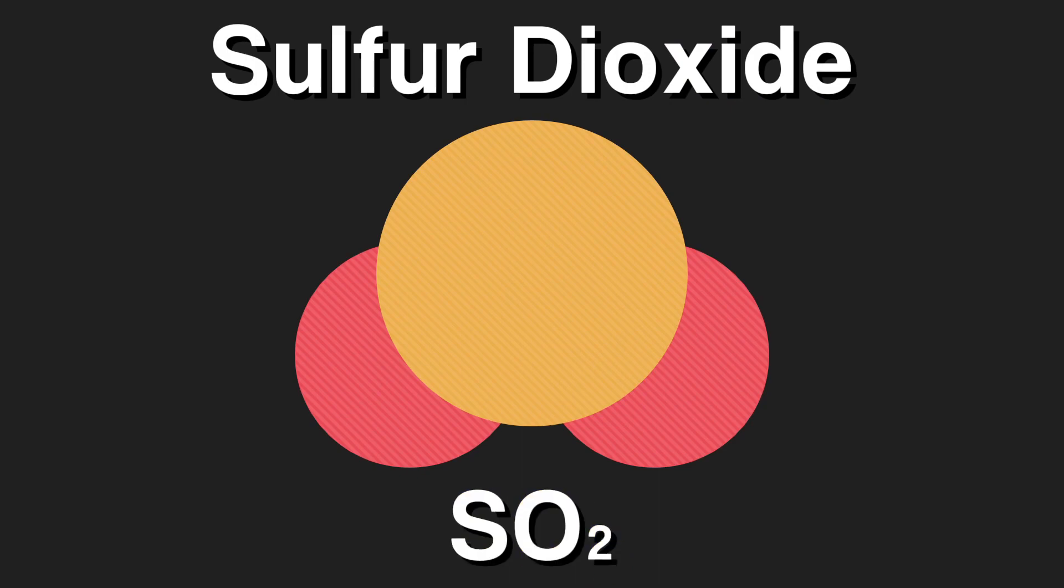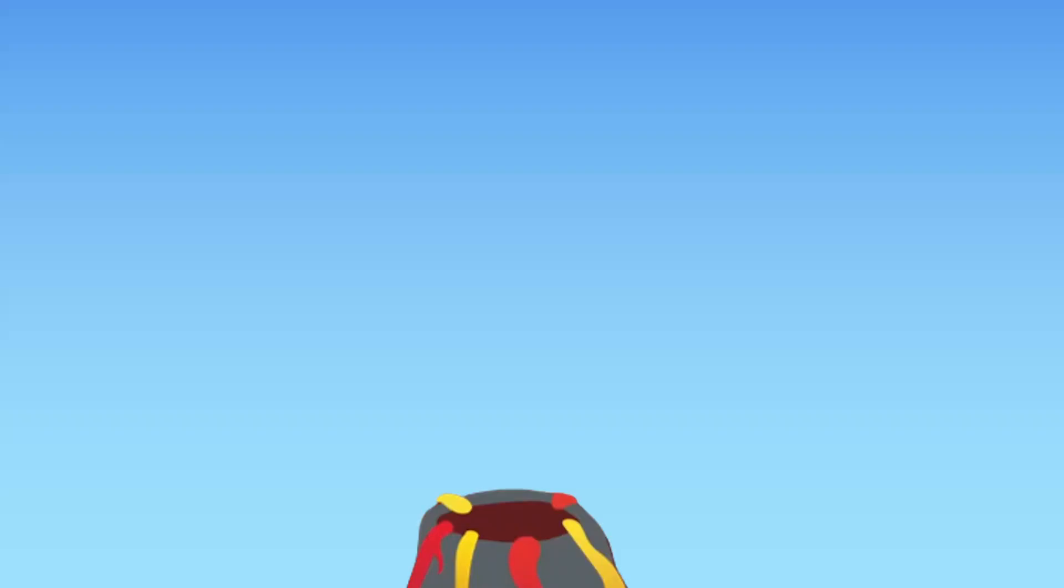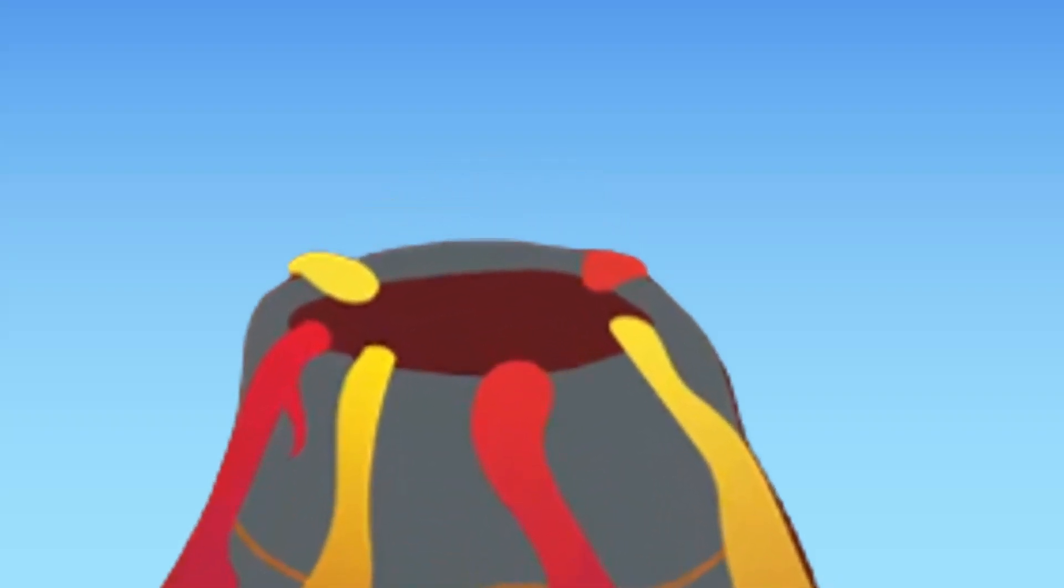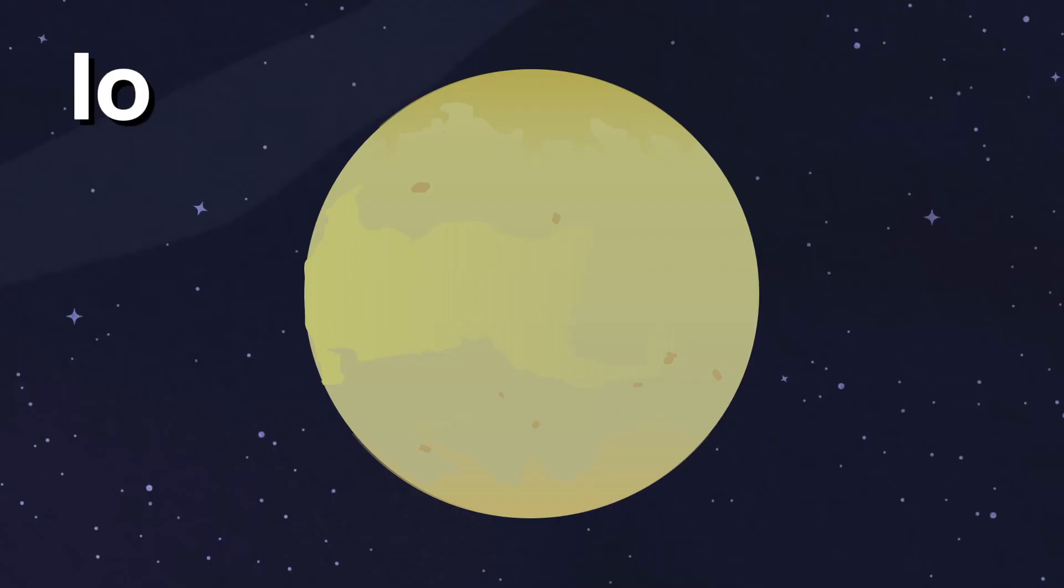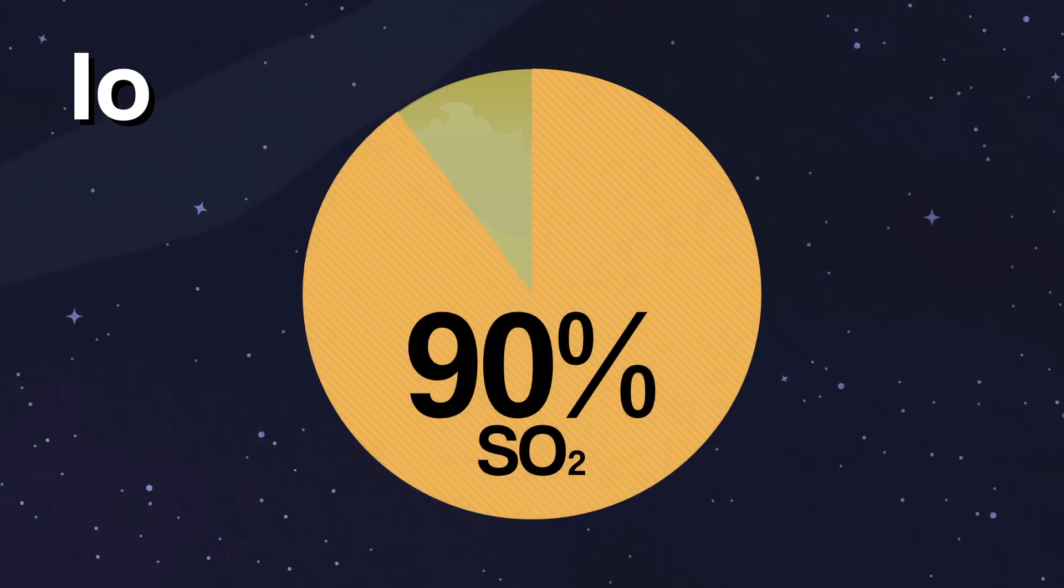Sulfur dioxide is also a toxic gas. It can be found inside the vents of active volcanoes. Do you know why Jupiter's moon IO is yellowish? It's 90% sulfur dioxide from the volcanic activity.